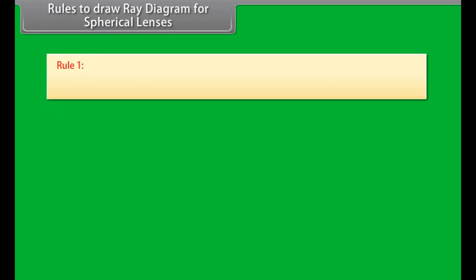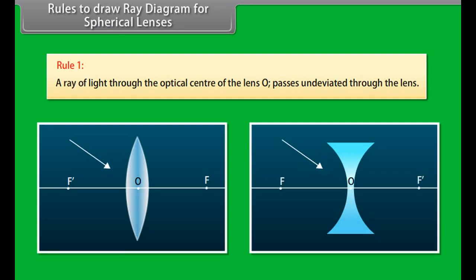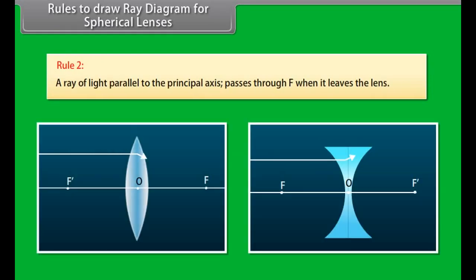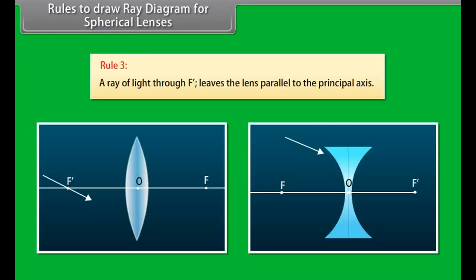Rules to draw ray diagrams for spherical lenses: Rule 1 — A ray of light through the optical centre O passes undeviated through the lens. Rule 2 — A ray parallel to the principal axis passes through F when it leaves the lens. Rule 3 — A ray through F' leaves the lens parallel to the principal axis.